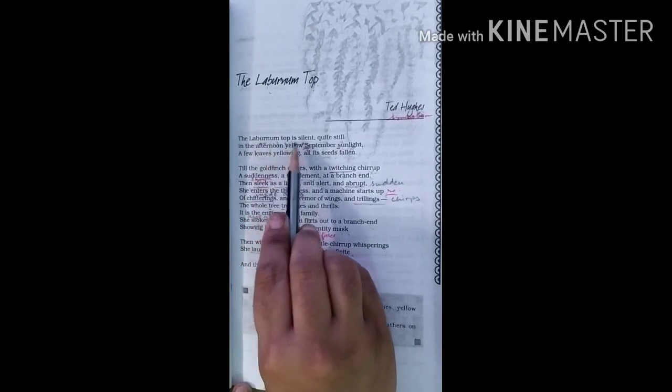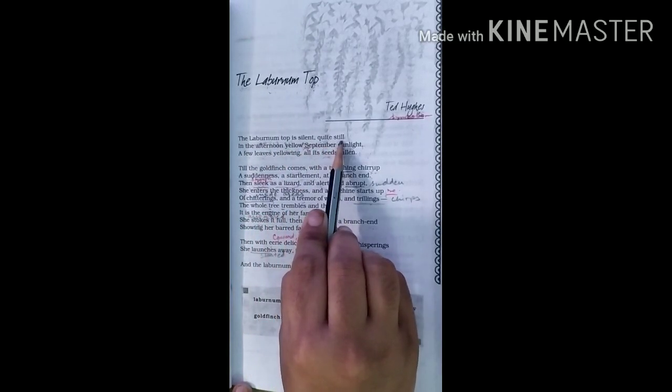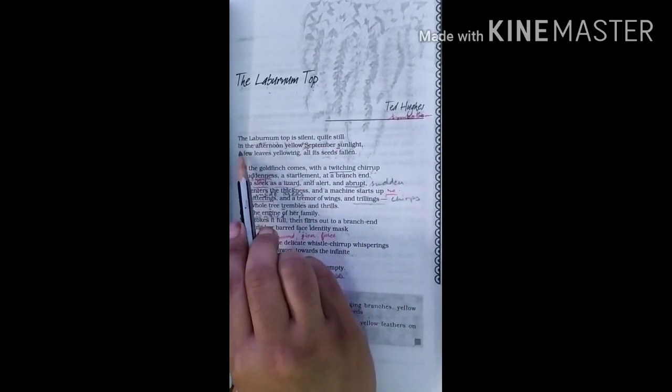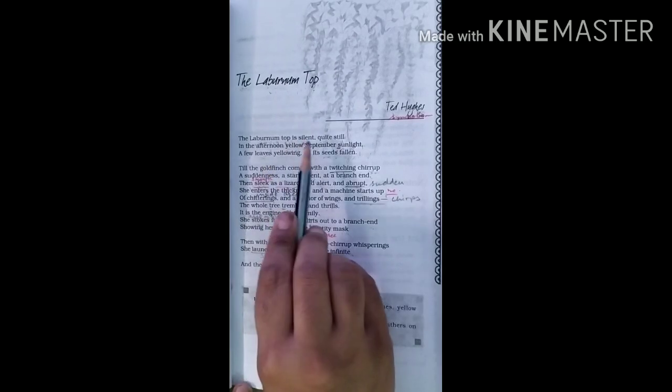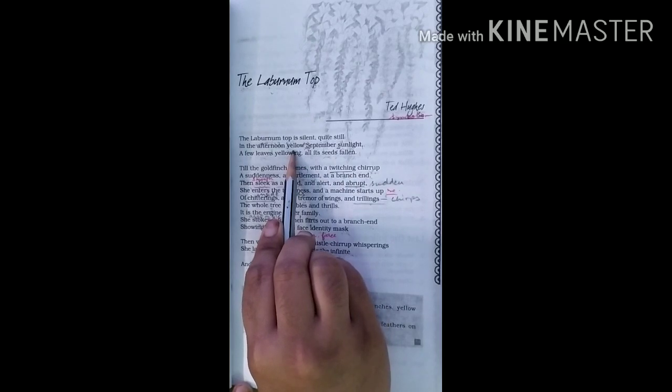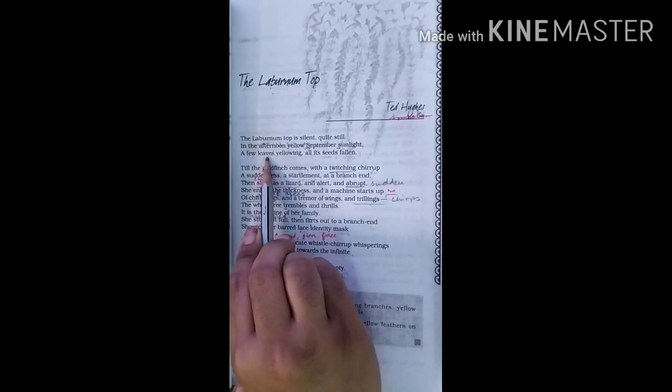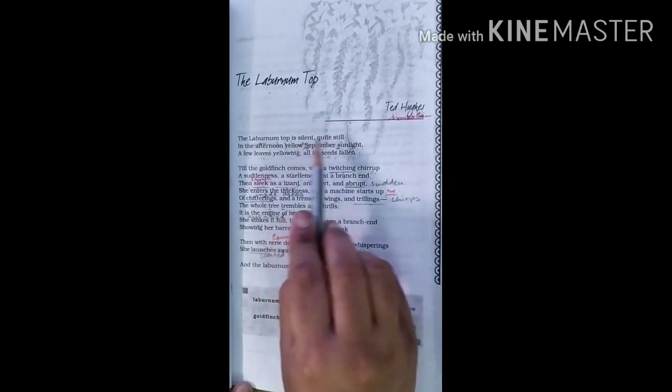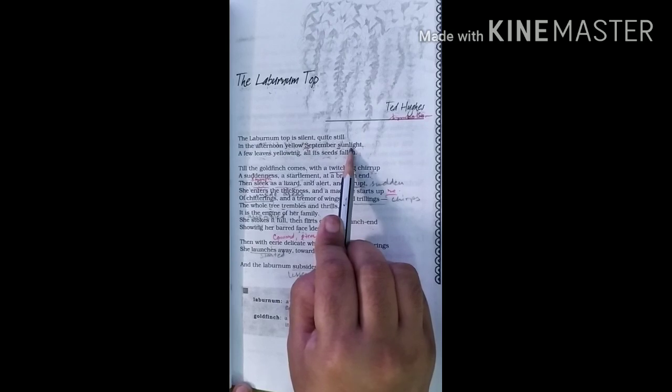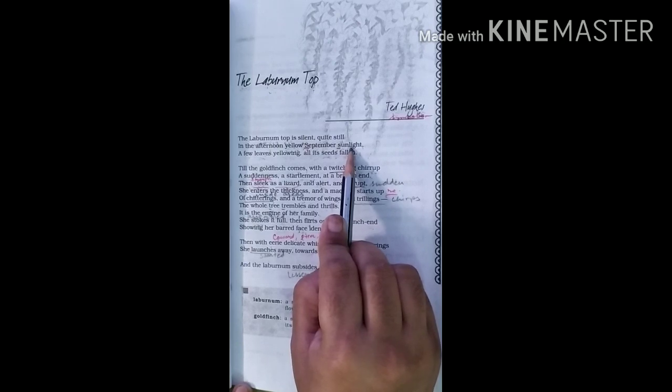The Laburnum top is silent, quiet, still. It means no movement is there. In the afternoon, which month's afternoon? He is talking about September month. And yellow, the word yellow is used for both the leaves of Laburnum tree and for sunlight also.